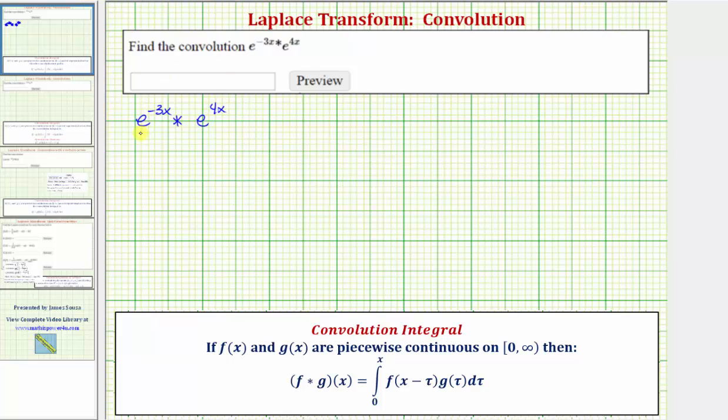Notice for our formula, f is the first function and g is the second function. So we'll have the integral from zero to x of f of the quantity x minus tau, which should be e raised to the power of negative 3 times the quantity x minus tau.